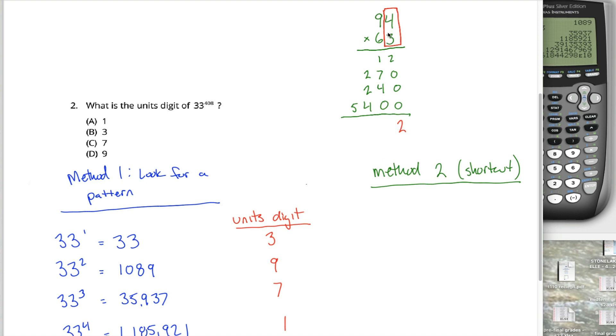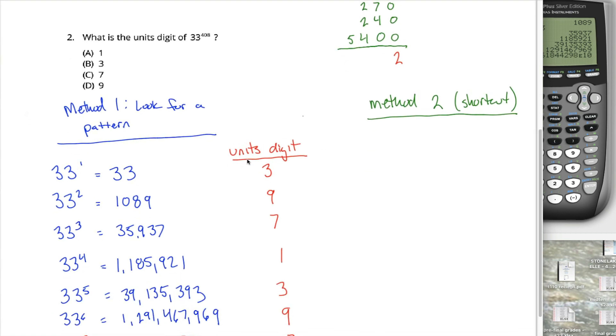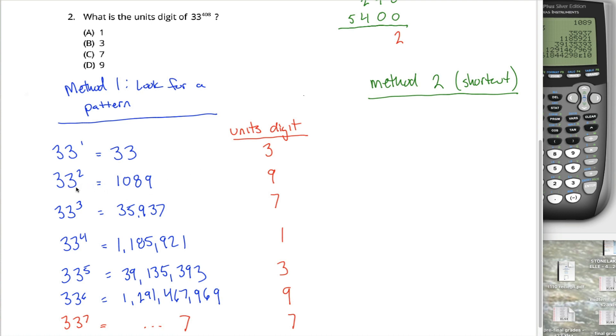The unit's digit of the product comes from this three and this four and nothing else. If you want to know the 10s digit, then you've got to consider 90 times three and 60 times four. If you want to know the 100s digit, you got to do even more work. But we don't. We just want the unit's digit. And the unit's digit of a product just comes from the unit of the two numbers that you're multiplying together. And that's really cool because that allows me to figure out the unit's digit of 33 times 33 immediately.